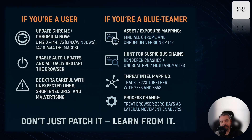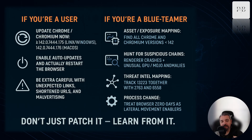Here's what matters for you right now. If you're a regular user: update Chrome or any Chromium-based browser to the latest version, enable automatic updates, and restart your browser regularly. Be careful with unsolicited links or shortened URLs, especially during periods when new zero-days are actively exploited. If you are a defender: inventory all Chrome and Chromium builds in your environment and find everything below version 142. Hunt for suspicious chains — renderer crashes followed by GPU or Mojo anomalies. In your threat intel mapping, track CVE 13223 together with 2783 and 6558. Assume chaining. Treat browser zero-days as potential lateral movement enablers, not just patching items.